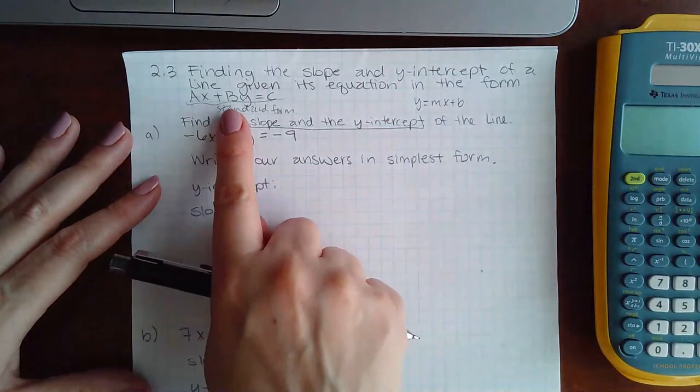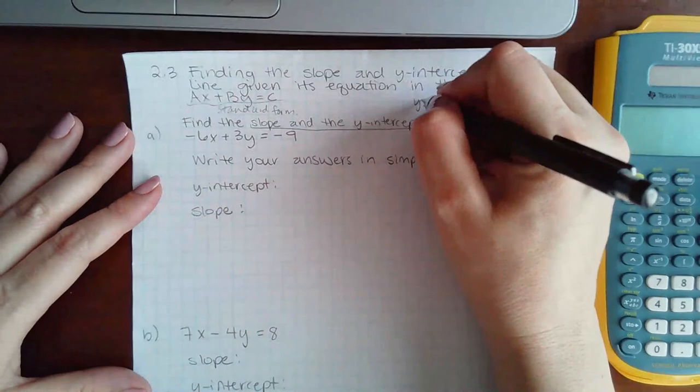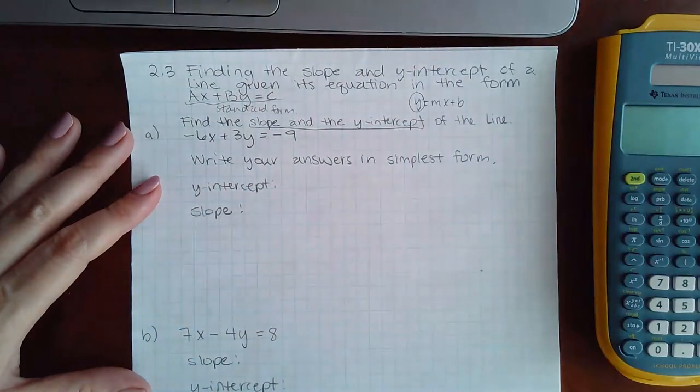So in order to take something that looks like this and put it into a form that looks like this, ultimately what we need to do is get y by itself.